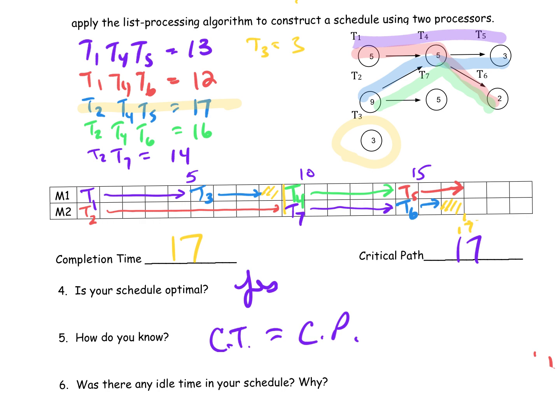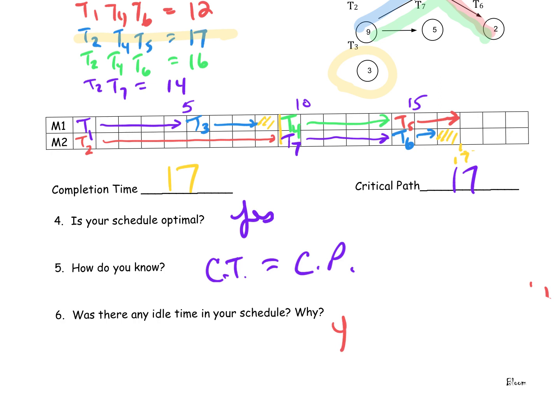When these two numbers match, congratulations — you have scheduled your project in the most efficient, most optimal way. Was there any idle time in your schedule? Yes. We had two units of idle time, but we still managed to schedule the project optimally. Why was there idle time? There wasn't anything ready to process in the project.